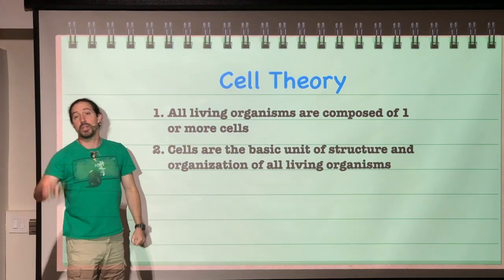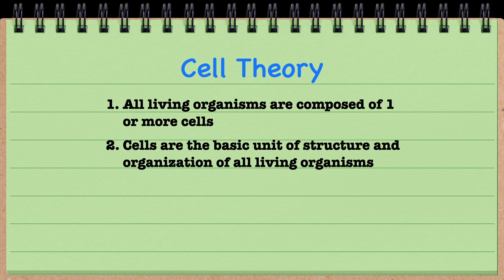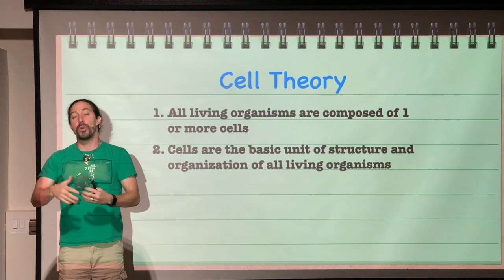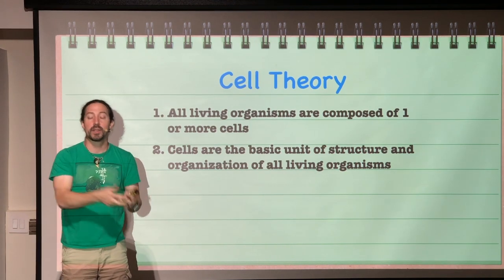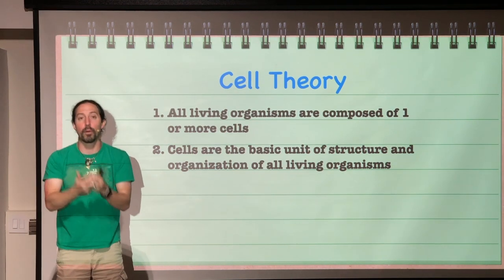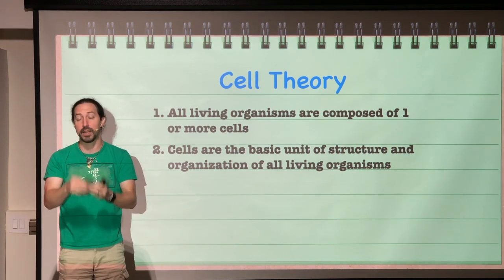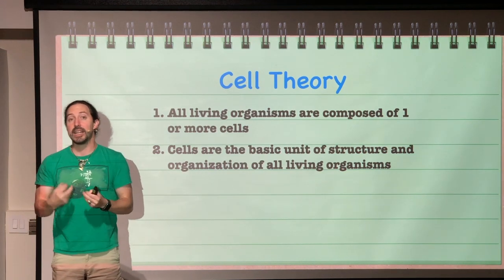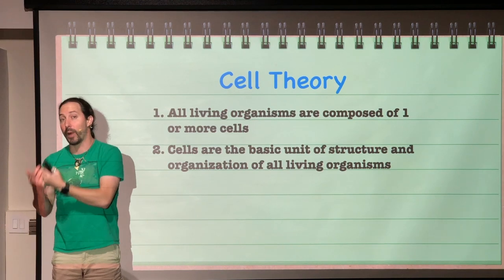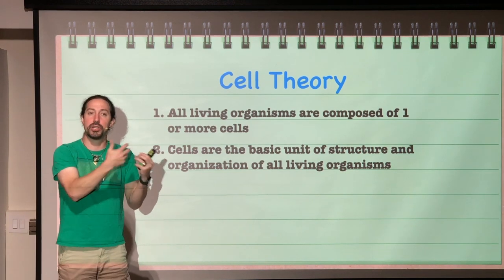Next, cells are the units of structure and organization for all organisms. It's important to recognize the key biological concept that structure and function go hand in hand. Cells with specific structures can perform specific functions. For a unicellular organism, one cell does everything. For multicellular organisms like ourselves, specialized cells perform specific functions very well, but they rely on other specialized cells to handle other functions.